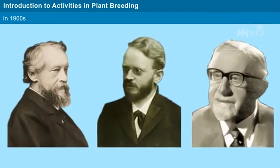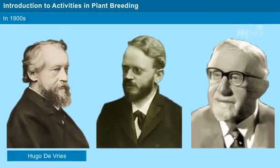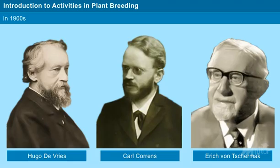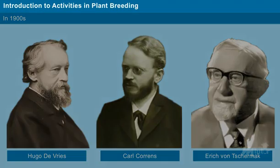Later in the 1900s, three scientists — namely Hugo de Vries, Carl Correns, and Erich von Tschermak — proved Mendel's law, which paved the way for rooting of hybrid plant varieties.